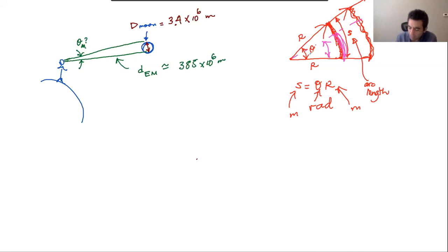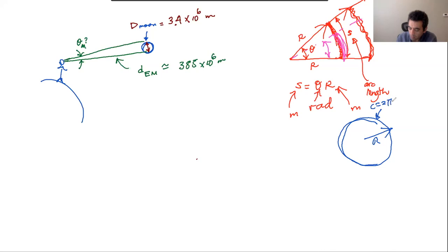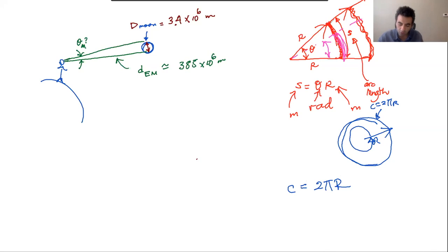You already know this relationship in one special case: for a full circle, the arc length is the full circumference C = 2πR. That's exactly S = θR with θ = 2π radians. In general, you can find the length of any arc by multiplying the subtended angle in radians by the radius.